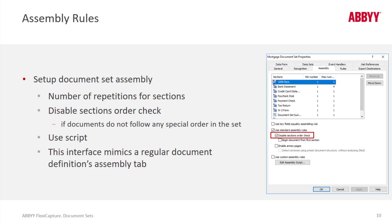In our basic course, we talked about document assembly in a document definition and the assembly tab — this is very similar. It's a very intuitive GUI interface that allows you to select the number of repetitions for given documents, which could be as few as zero and as many as you need. You can also do things like disable section order checks and add scripts as well.